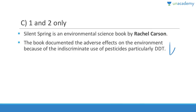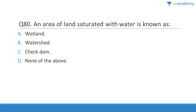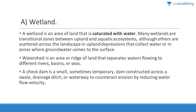Question 80: A wetland is an area saturated with water; many wetlands are transitional zones between upland and aquatic ecosystems. A watershed is an area that separates water flowing to different river basins or seas. A check dam is a small, sometimes temporary dam constructed across a drainage ditch.